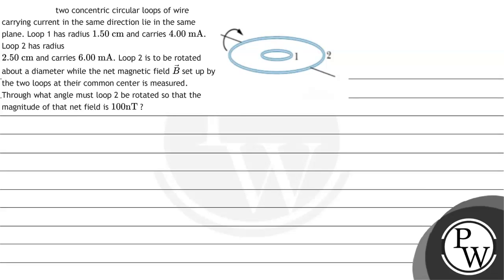Hello Acheon, let's read the question. The question says two concentric circular loops of wire carrying current in the same direction lie in the same plane. Loop 1 has radius 1.50 cm and carries 4 mA.